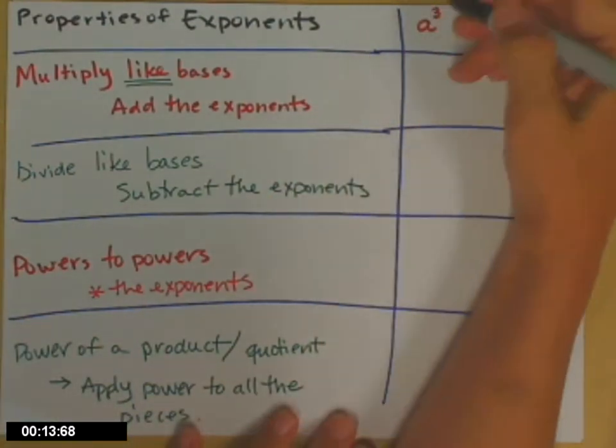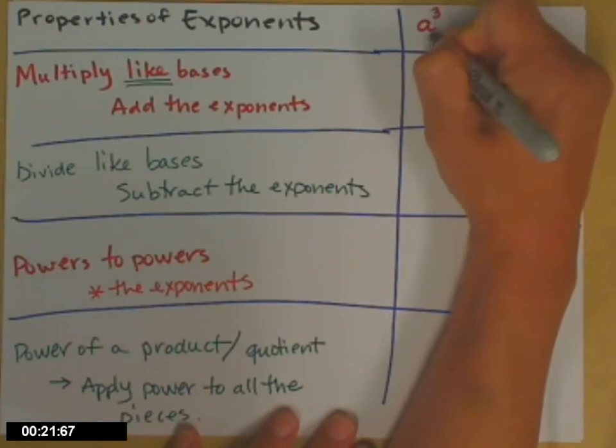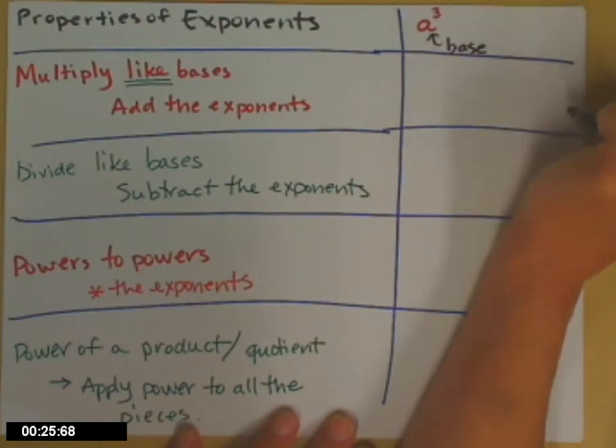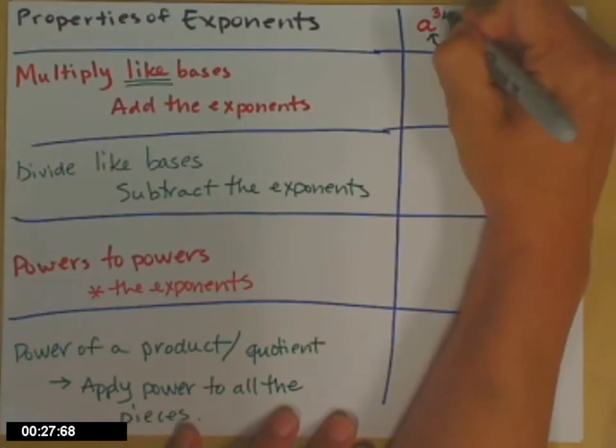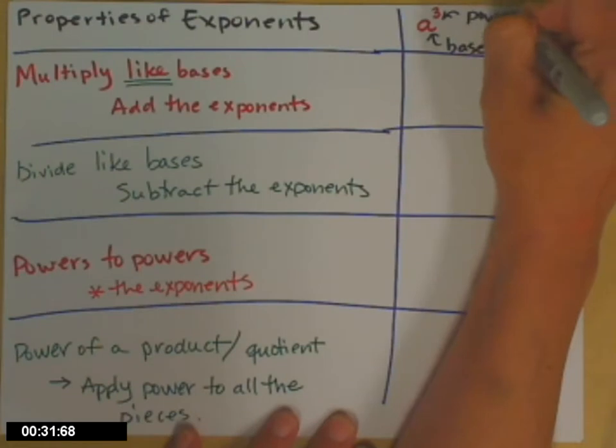First, let's get our vocabulary down. I need to know what the base is and what the exponent is in the expression a cubed. Actually, I need you to know it. a is the base, so the base is the part being raised to the power. And 3 is the power, or you might use the word exponent.